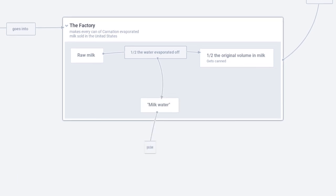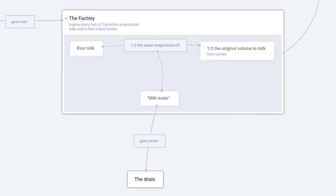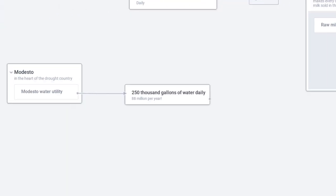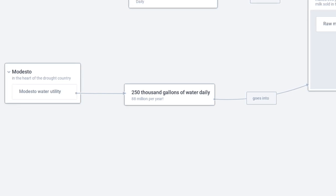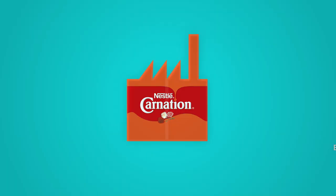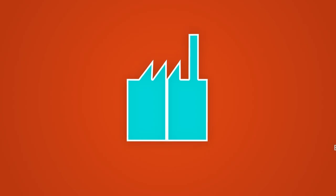They call the evaporated water 'milk water.' They also buy 88 million gallons of water a year—250,000 gallons of fresh water a day to run the factory. So in one part of the factory, they're evaporating 200,000 gallons of water a day, the milk water,